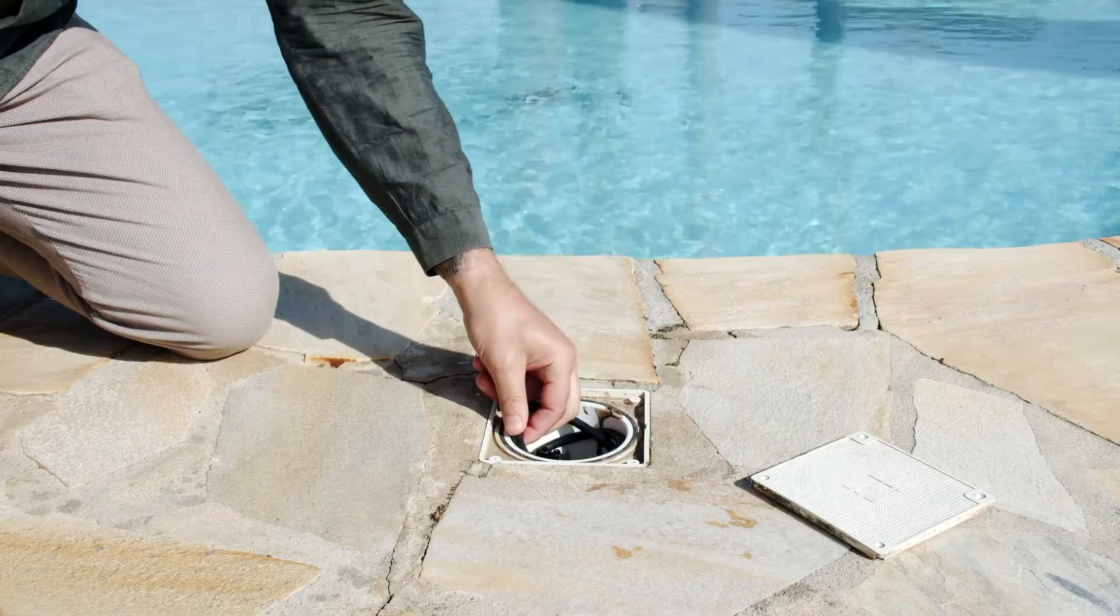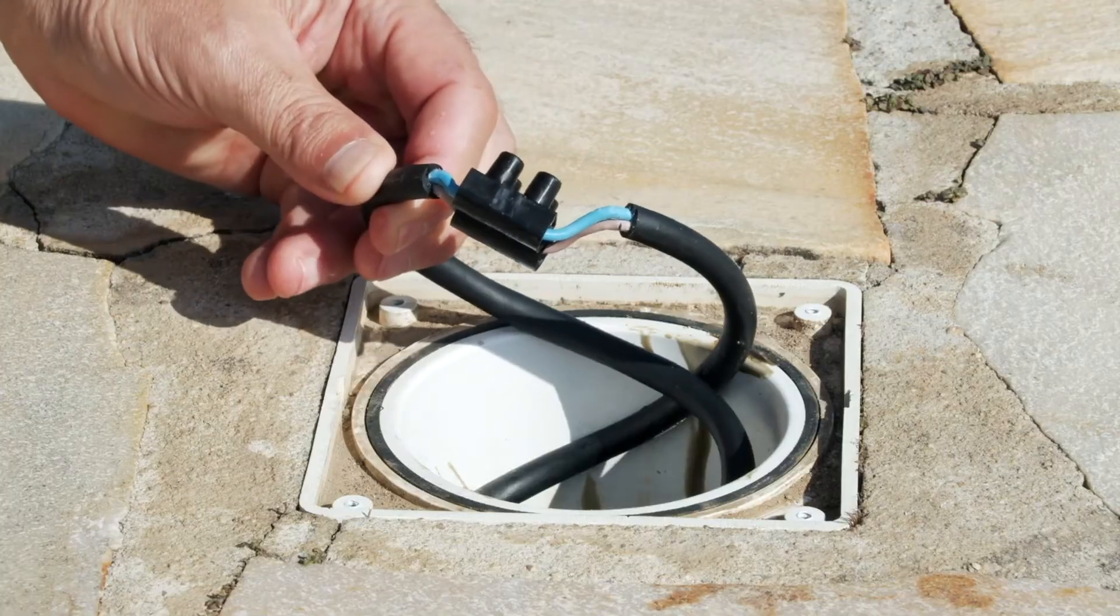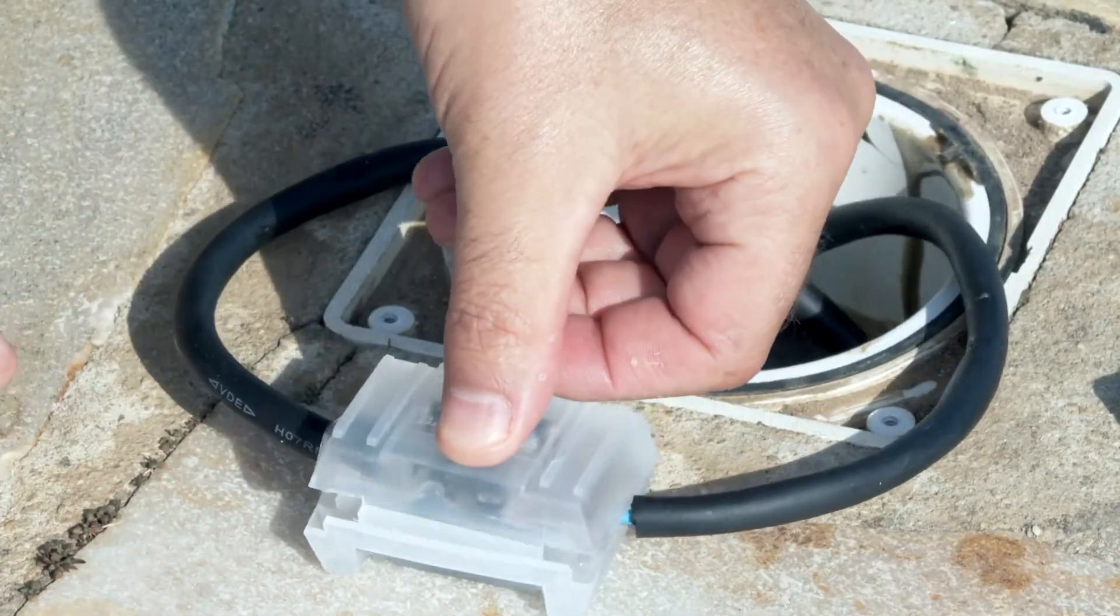Simply select the connector that needs securing, dry it if necessary, place it in our Gelbox, then close the casing. The gel will naturally surround the connector, thus ensuring instant water tightness.